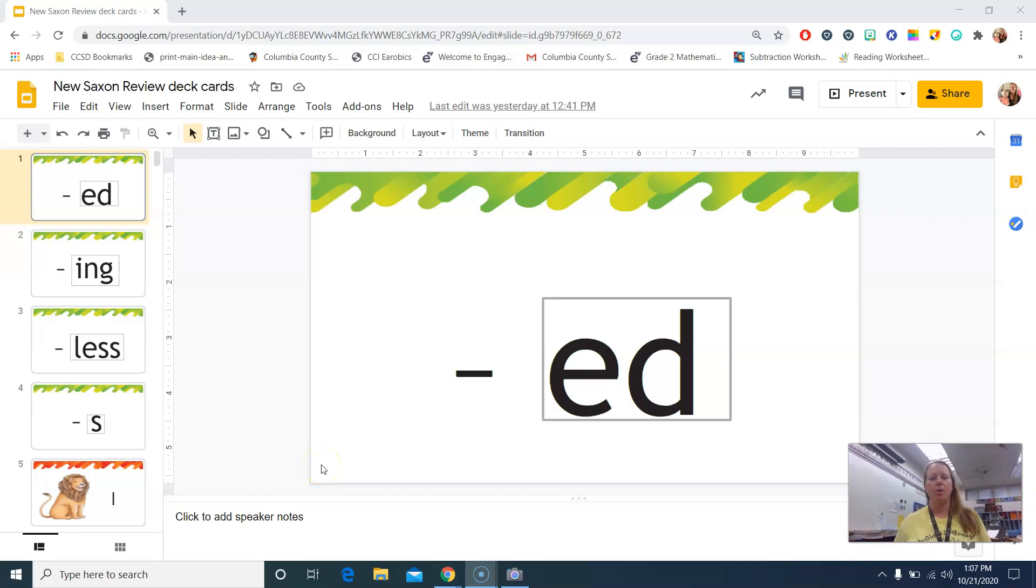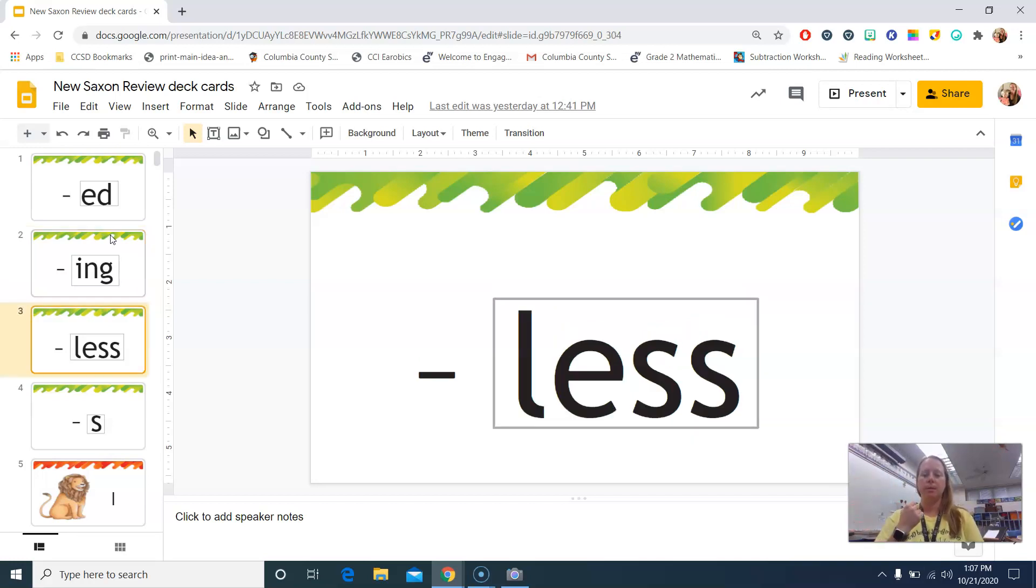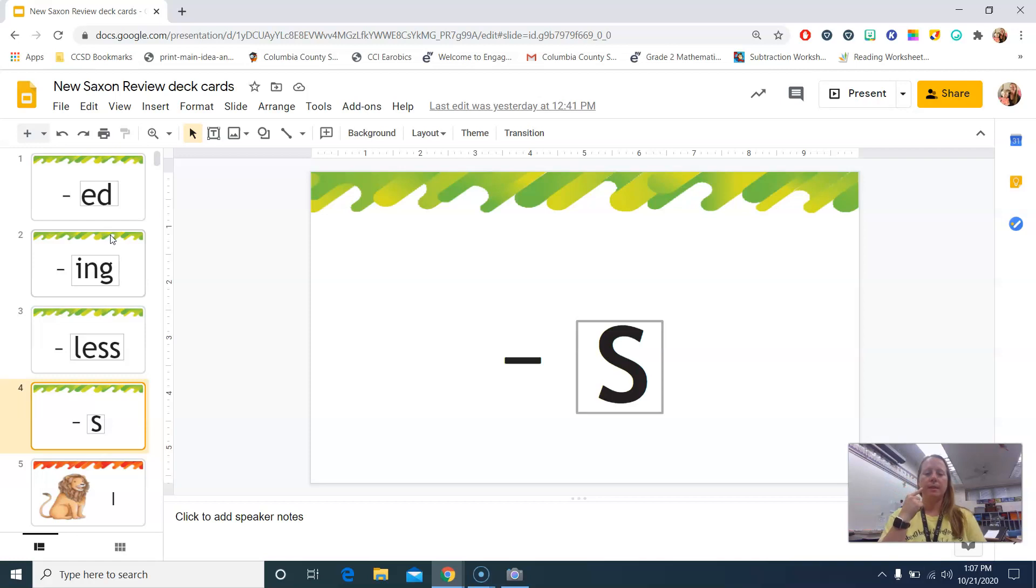All right, let's go ahead and go over our review deck. We have suffix ED. ED means already happened. Suffix ING means happening now. Remember when I point to you, you repeat what I said. Suffix less means without. Suffix S means more than one.